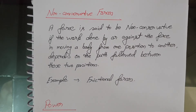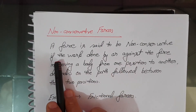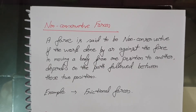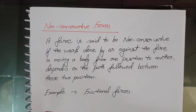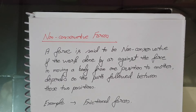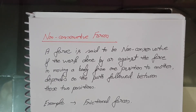Non-conservative forces: a force is said to be non-conservative if the work done by or against the force in moving a body from one position to another depends on the path between the two positions. Friction is an example. If a body is moved from point A to point B on a rough table, work done against friction depends on the length of the path, not just on the positions of A and B. If the body is brought back to the initial position, work has to be done against friction again, so the work done over a round trip is not zero.